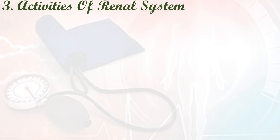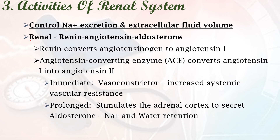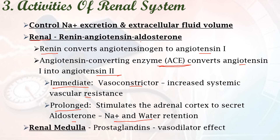The third mechanism is activities of the renal system. First, it controls sodium excretion and extracellular fluid volume to regulate blood pressure. Second, the renin-angiotensin-aldosterone mechanism: renin converts angiotensinogen to angiotensin 1, and ACE (angiotensin converting enzyme) converts angiotensin 1 to angiotensin 2. The immediate effect is vasoconstriction increasing systemic vascular resistance and blood pressure. The prolonged effect is stimulation of the adrenal cortex to secrete aldosterone, causing sodium and water retention, thereby increasing fluid volume and blood pressure. In the renal medulla, prostaglandins activate to regulate a vasodilator effect.